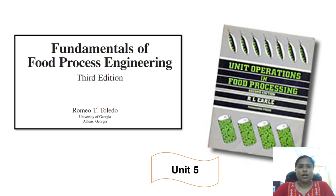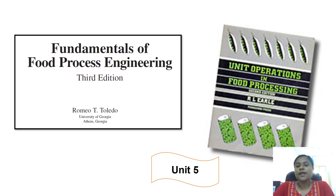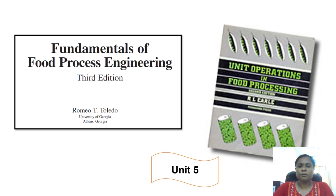The next books are 'Fundamentals of Food Process Engineering' by Toledo and 'Unit Operations in Food Processing' by Earle. In Unit 5, there are many small titles such as granulation, coagulation, mixing, and filtration. These small topics can be covered easily by referring to these two books, as both Toledo and Earle have listed and described these topics concisely in about one page each.